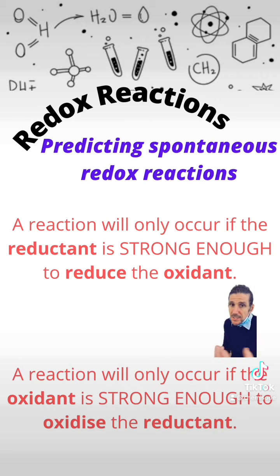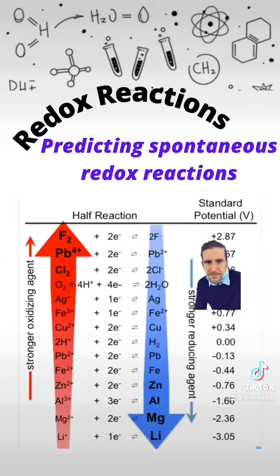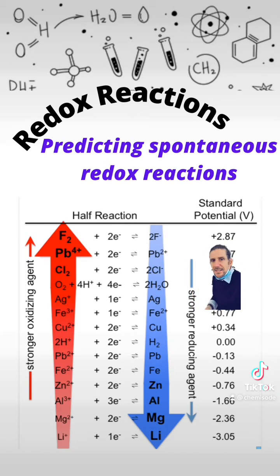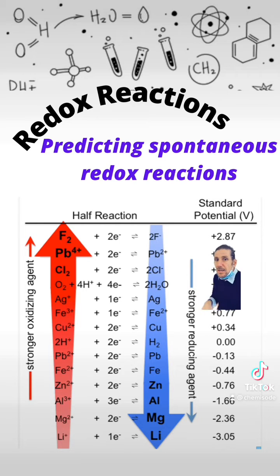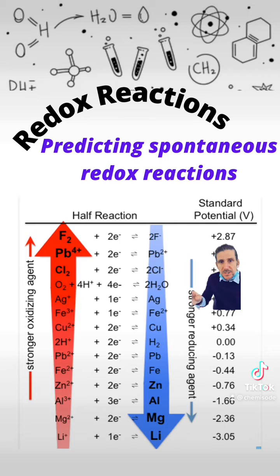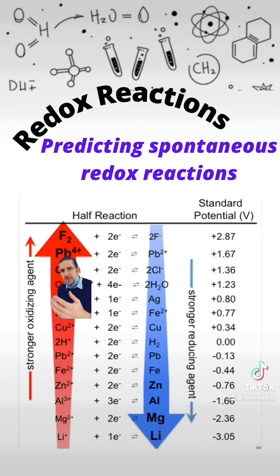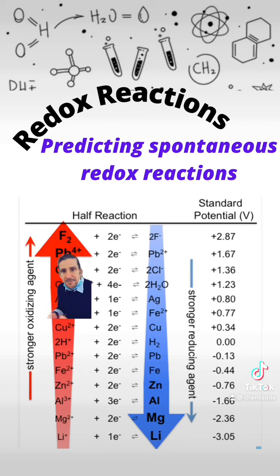The question is, how do you know if it's strong enough? Well, that's where the electrochemical series comes in handy. It shows you how strong oxidants are and how strong reductants are. The rule of thumb goes: if the oxidant, which is on this side of the electrochemical series, is higher than the reductant, you will have a reaction that will occur.